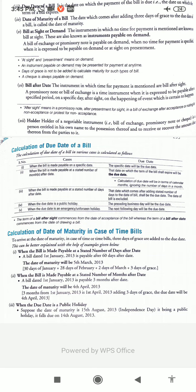Endorsement of a bill means transfer of the right to receive money to some other party. Suppose A writes a bill on B; the bill is duly accepted by B who returns it to A. A has to pay a certain amount to C. Now A can transfer the right to receive money in favour of C. For such transfer, A will write an order at the back of the bill in case of an order bill: 'Please make the payment of this bill to C.' Now B will make the payment of the bill to C. This transfer of the bill through an order is called endorsement of the bill.